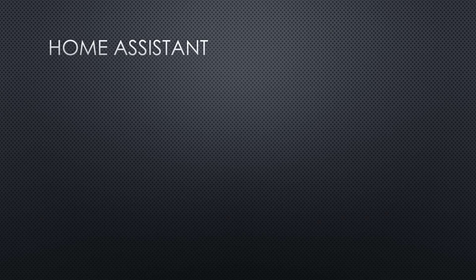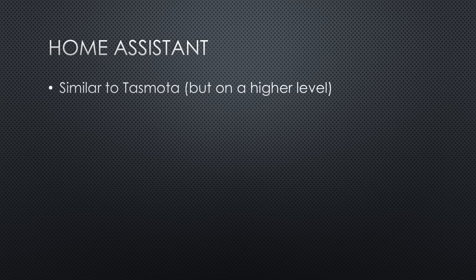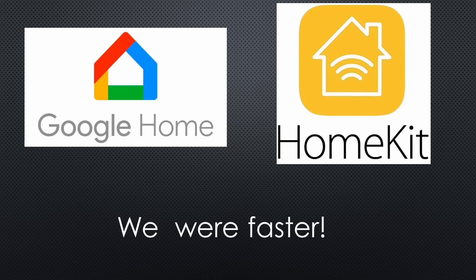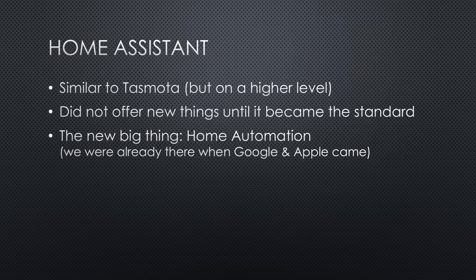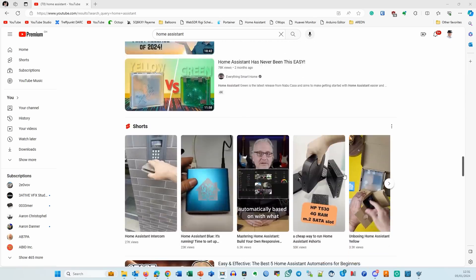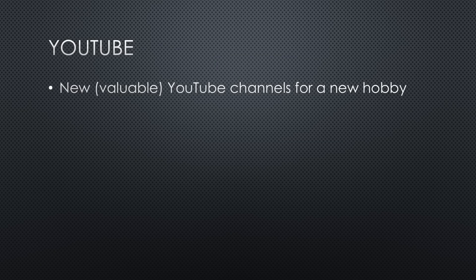The next move up the ladder of abstraction was Home Assistant. It started similarly to other projects like Tasmota, but on the level of Unix. In the beginning, it did not offer anything we did not already have. But over the years, it became the de facto standard, and what we had done already for years got a new name: Home Automation. With this trend, we now get a ton of Home Assistant compatible sensors and actuators — the same as we saw with Arduino compatible and Raspberry Pi compatible a few years ago. This is always the proof that we have arrived at a new rung of the abstraction ladder. On this new layer, new YouTube channels appeared. Most of them have no clue about the lower levels like microcontrollers, programming, or even transistors. Still, they attract a lot of views because they provide a lot of good know-how. A new hobby on a higher level emerged.